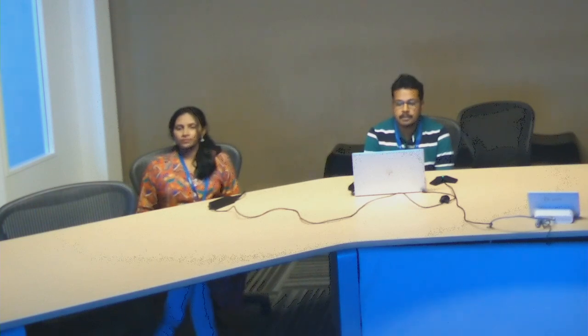This topic continues with automation challenges and solutions using the robot framework. Let's start with the introduction to robot framework. Even a layman can understand the robot framework syntax — it's very simple to use. Currently, we have the test data syntax, then the robot framework. In the backend, we have test library APIs designed for running the robot framework, then test libraries such as Selenium and Sphinx, and finally the application interfaces, which is the system under test.